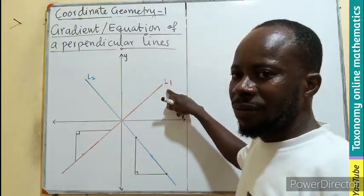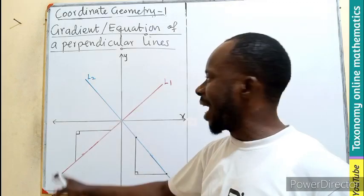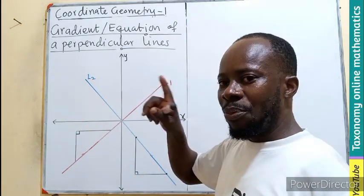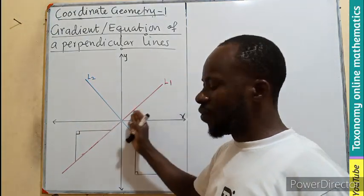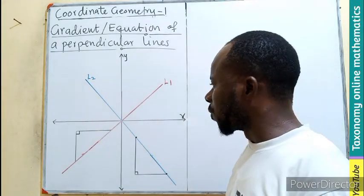So, let's pick the L1 as gradient 1. That's the first line. Then, this is the second line. Now, we know from the previous episode that this line will give you a negative gradient. This will give you a positive gradient. Alright, so we can apply that concept also.